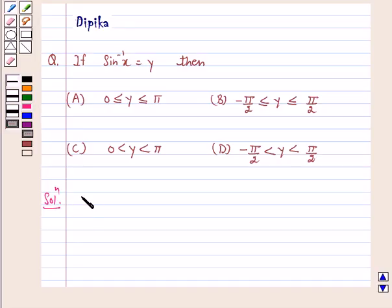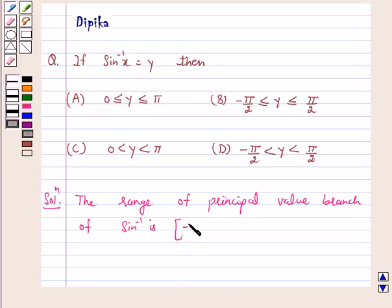We know that the range of principal value branch of sine inverse is the closed interval minus π/2 to π/2.